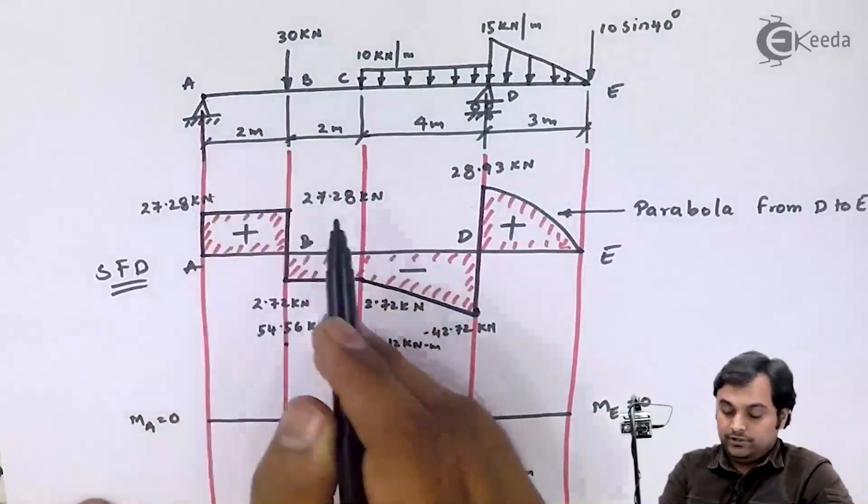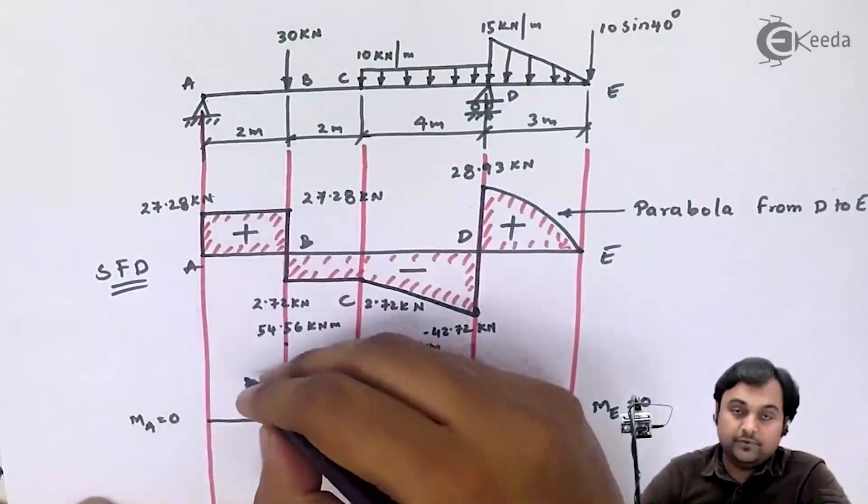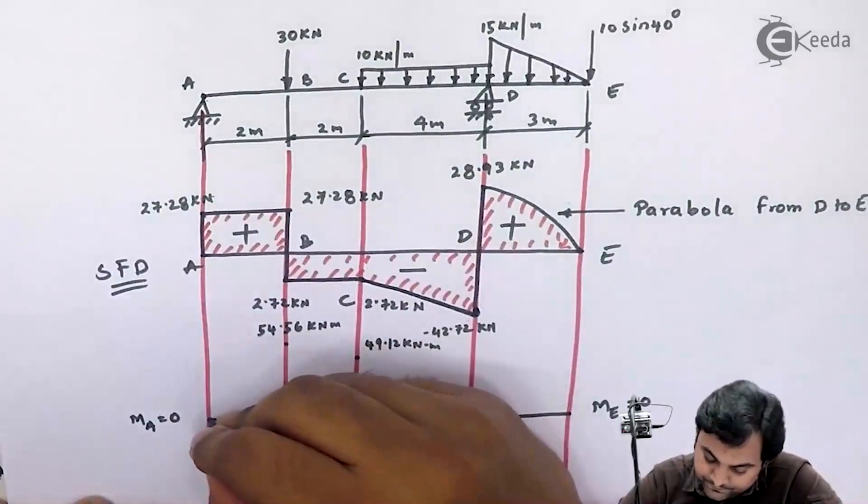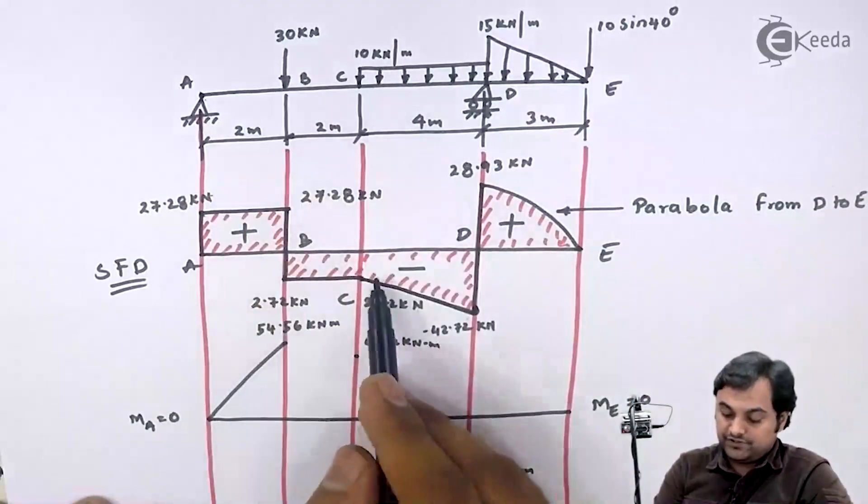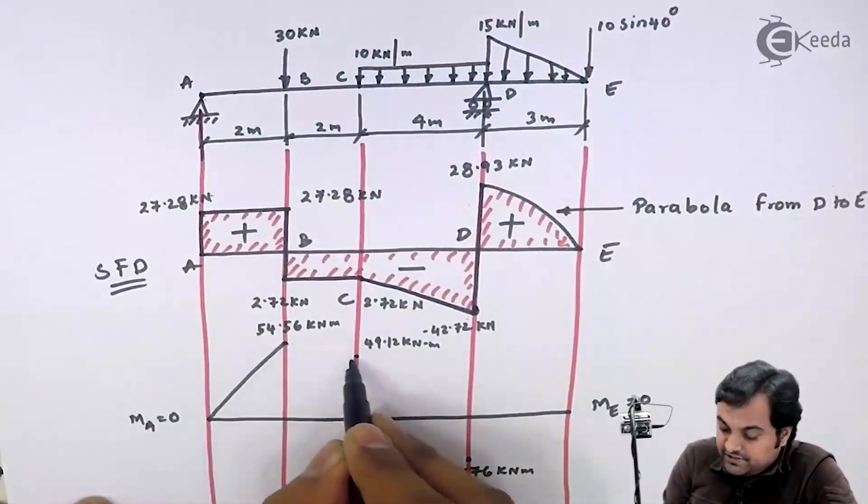Between A to B there is no load. Shear force was straight line, bending moment as inclined line. Again between B to C there was no load, shear force was a straight line, bending moment is an inclined line.